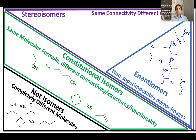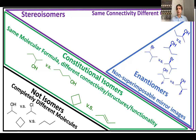Every molecule has a mirror image, just like everything else — the key is whether that mirror image is superimposable. If two molecules are perfect mirror images and non-superimposable, they are enantiomers. In contrast, cyclobutane has a mirror image, but the mirror image is also cyclobutane and would be superimposable, so cyclobutane does not have an enantiomer. Non-superimposability is the essential requirement.